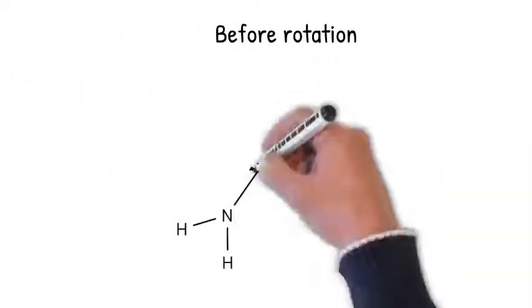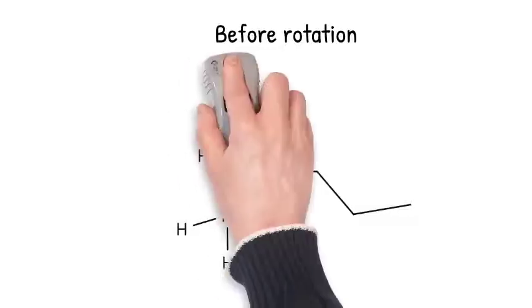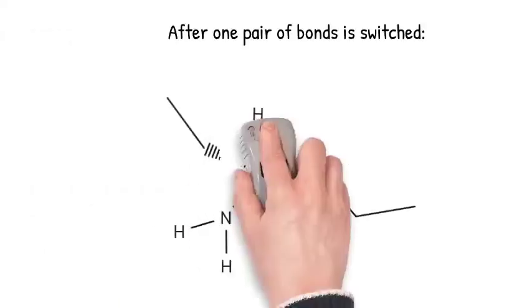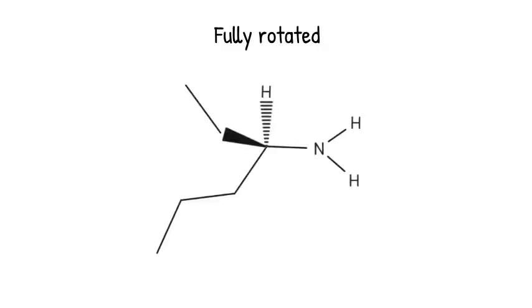The second method of rotating your molecule does not require a modeling kit. You can switch the bond directions of two different pairs of atoms without modifying the same atom twice, and you will get the needed result. Since you want hydrogen to be pointing away from you, let's switch it with the ethyl group here. Then switch the remaining propyl and amino groups, and you're done. The end result is that we've rotated the molecule completely without making or breaking any bonds.